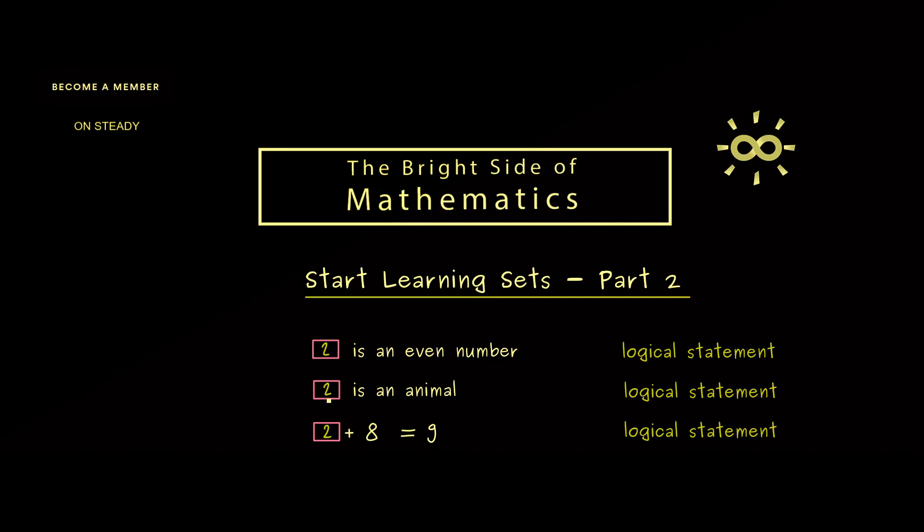For example, if we fill in the number 2 we get '2 is an even number' which is a logical statement. Also we get '2 is an animal,' '2 + 8 = 9,' also logical statements. This simply means that each of the sentences has a well-defined truth value. However, in this case we already know it: 2 is an even number is a true logical statement and the other ones are false.